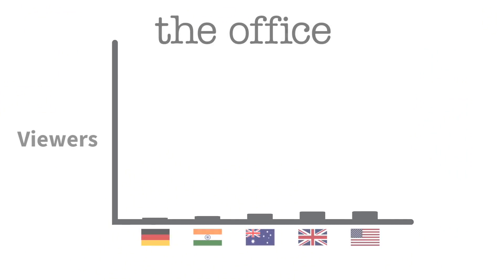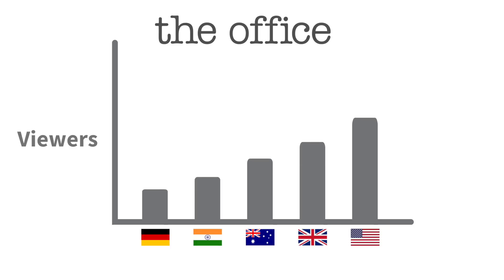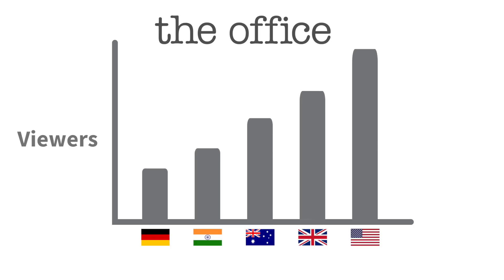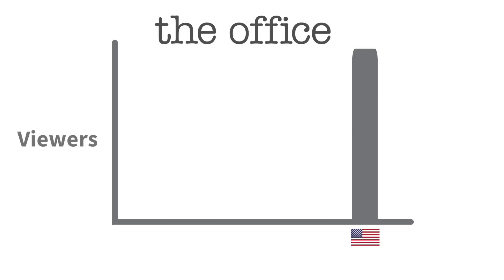It's because the media houses that own the rights to these movies and TV shows geo-restrict them — take The Office, for example. Netflix has to buy the distribution rights for The Office US for each country separately, so if they see enough demand from the US but not so much from Australia or the UK, they'd only get the rights for America, and Netflix users in the UK and Australia wouldn't get to watch it.